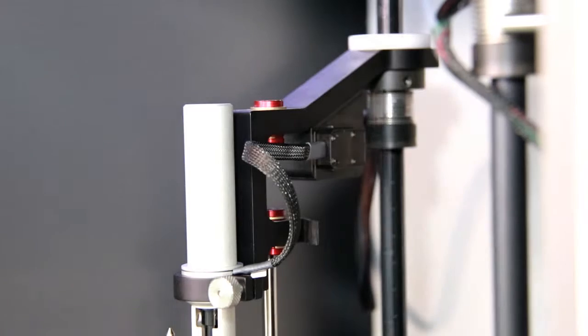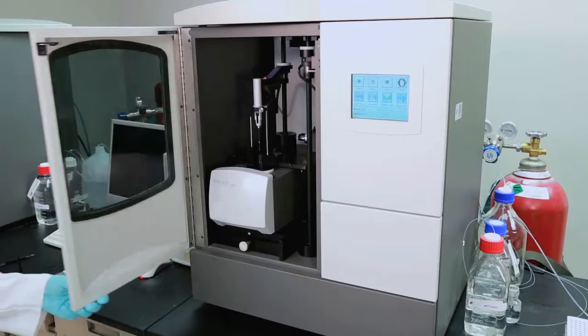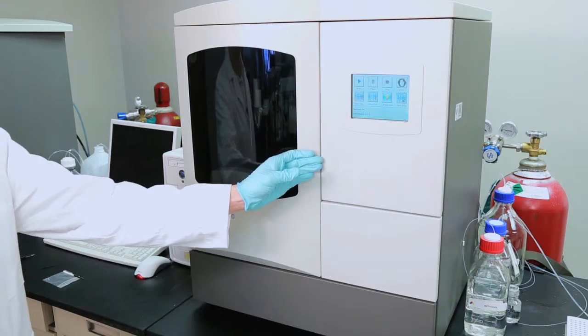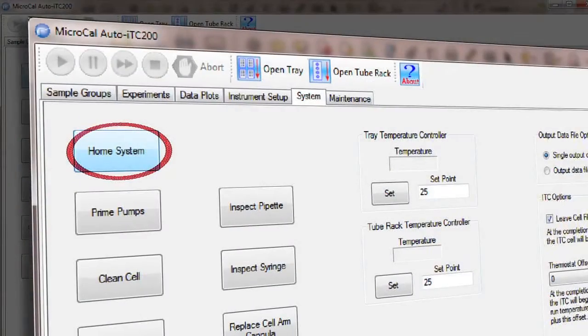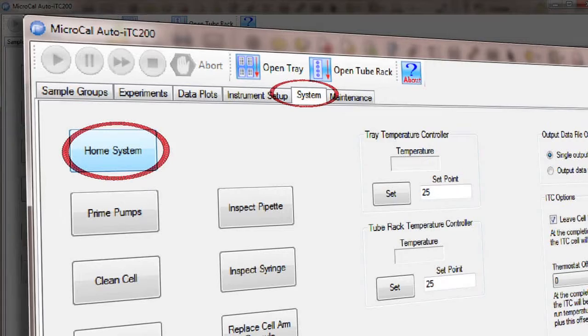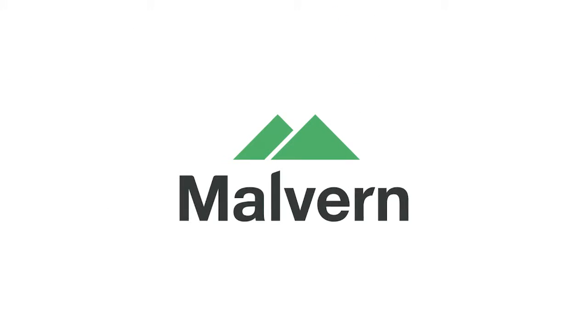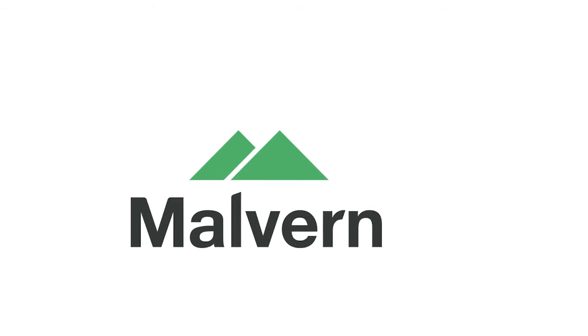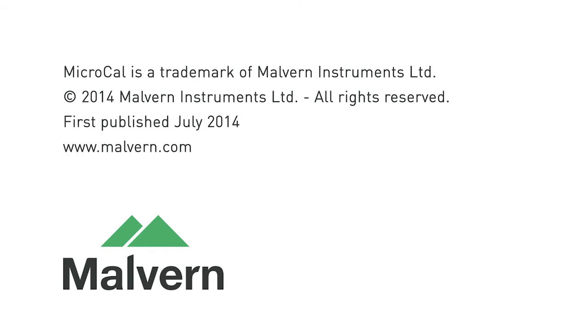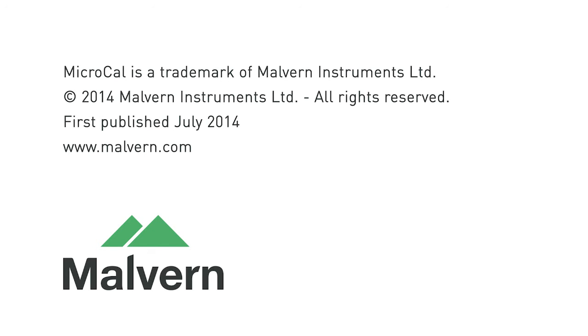As with any maintenance operation, the last step should be to close the door and home the instrument from the system tab of the Auto ITC 200 software.